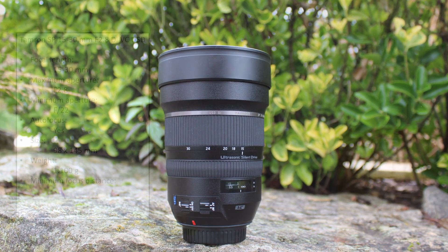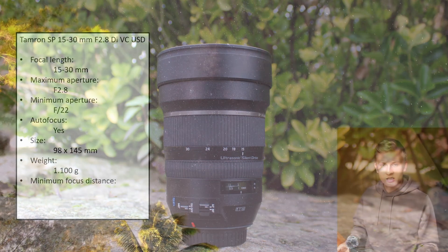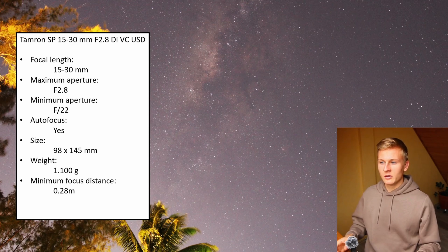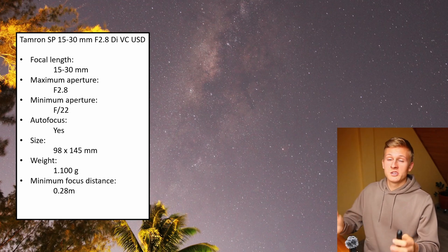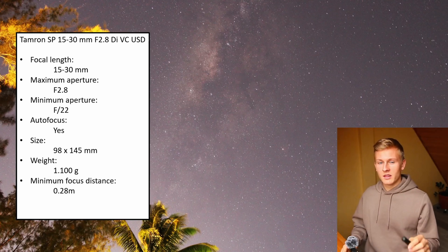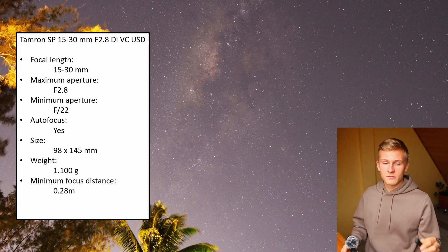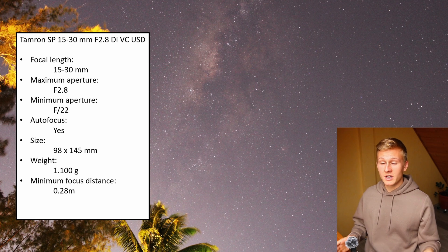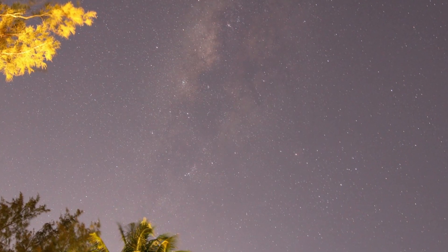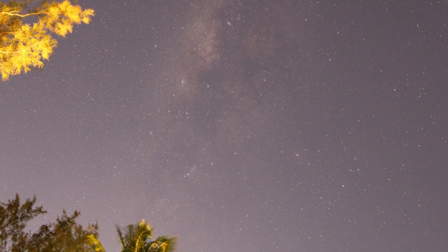The minimum focus distance is around 0.28 meters, which is great if you'd like to include a bit of foreground in your final images. Now I'd like to talk about the pros and cons of using this lens for astrophotography, which is the main focus of this video.